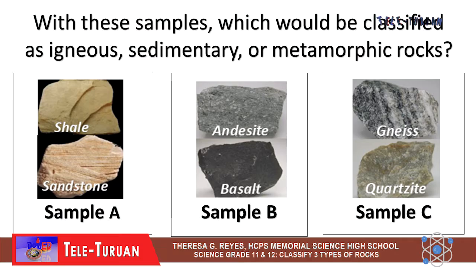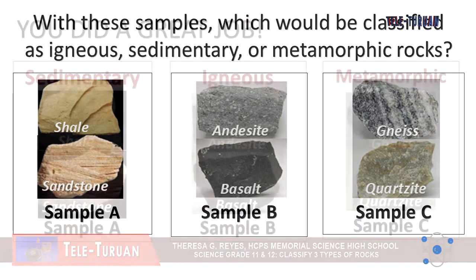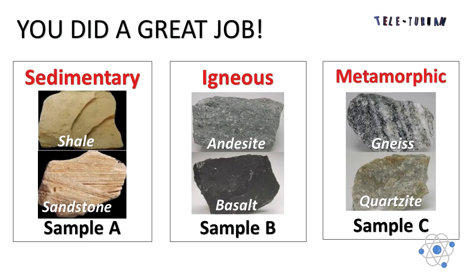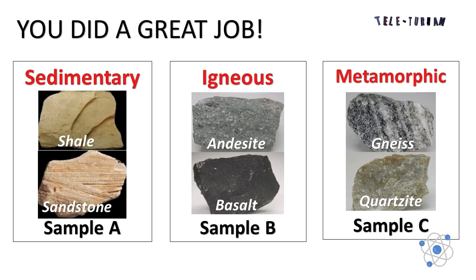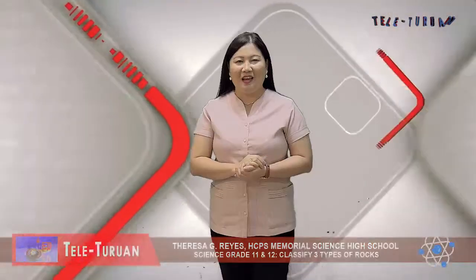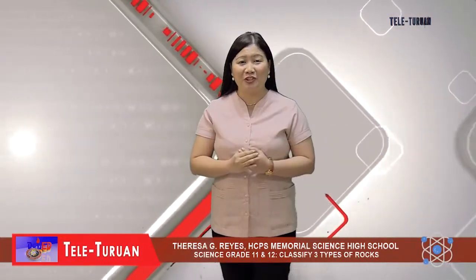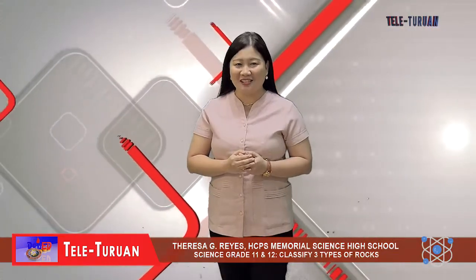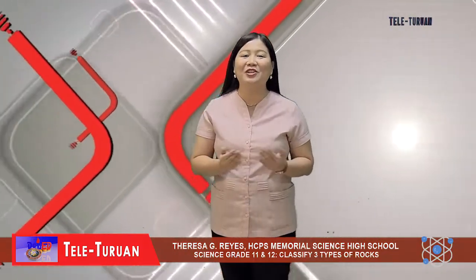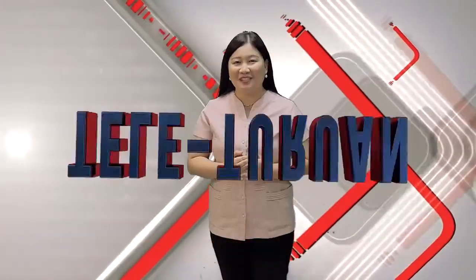With the samples, which would be classified as igneous, sedimentary, or metamorphic rocks? There you have it. Shale and sandstone in sample A are classified as sedimentary. Andesite and basalt in sample B are igneous. And gneiss and quartzite in sample C are metamorphic rocks. You did a great job. I hope you have gained significant learning today. You can start and organize your rock collection now. Again, this is Teresa G. Reyes, your Earth Science teacher here at Depeg Teleturuan. Good day!